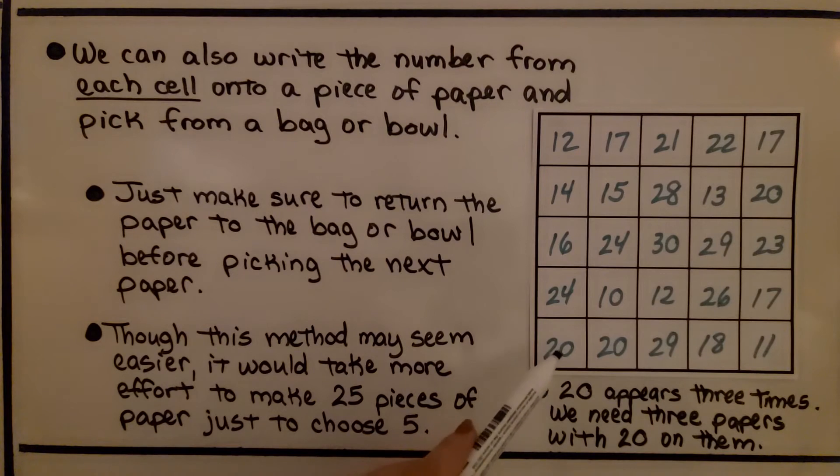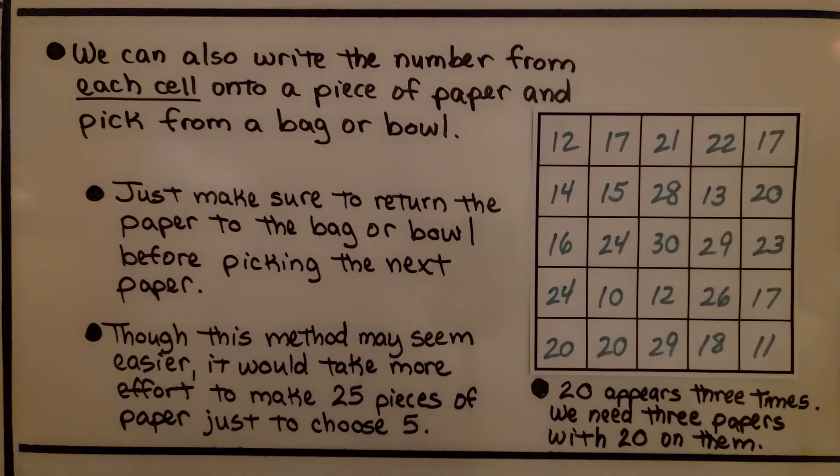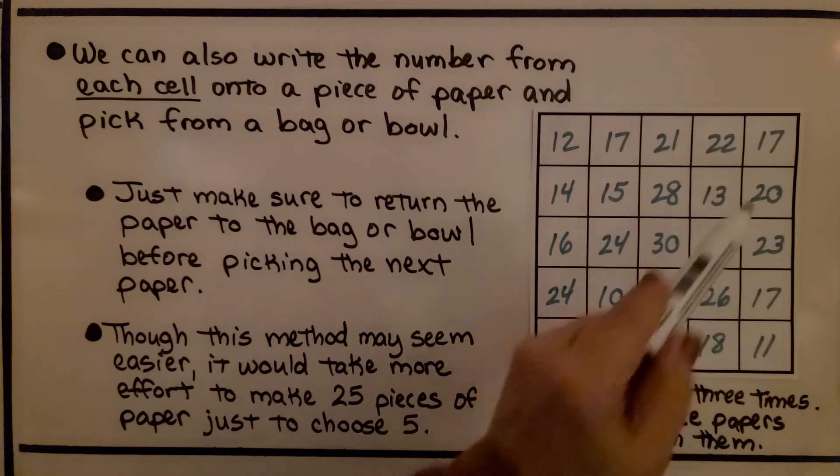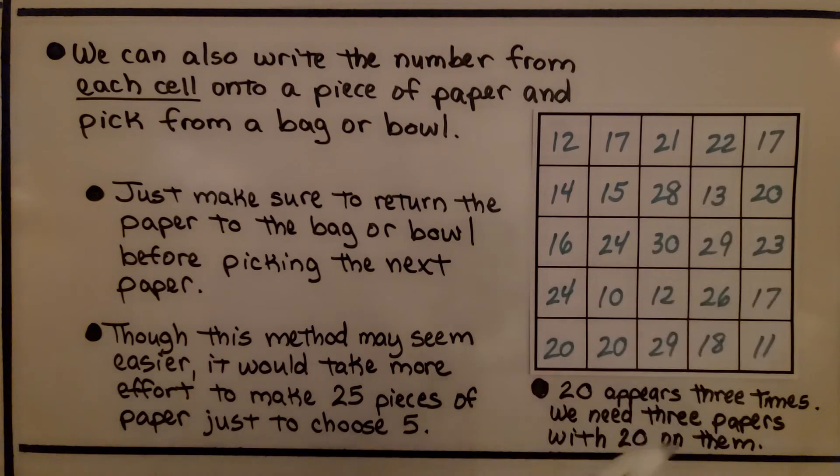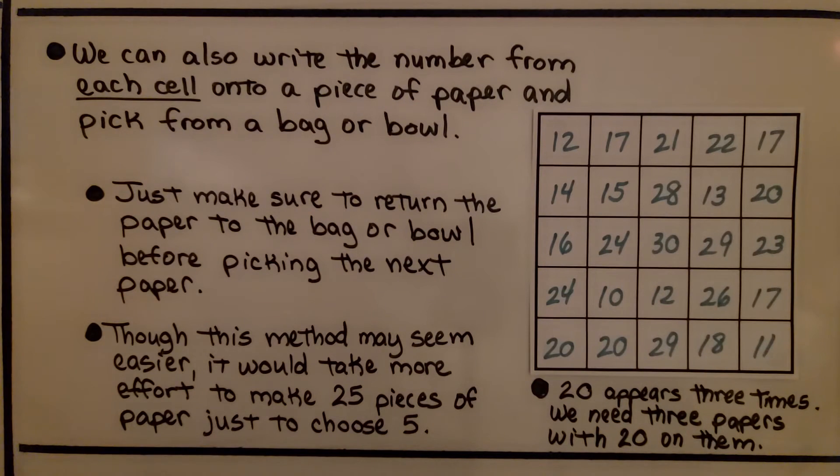If you notice, 20 appears three times. We have it here, here, and here. That means you would need three pieces of paper with 20 on them. Any numbers that repeat, here we have a 17 and a 17, you'd have to have two pieces of paper with 17 on them to match this table. It would be a lot easier to just make one through five and do the row and column thing quickly.